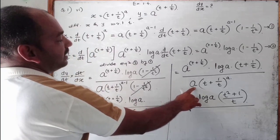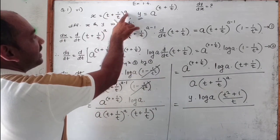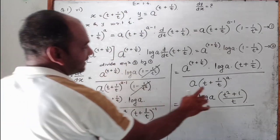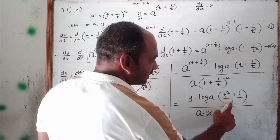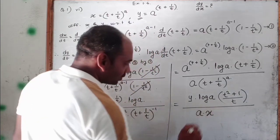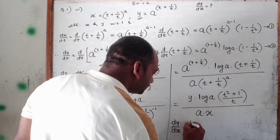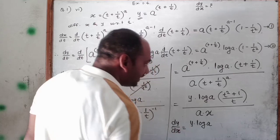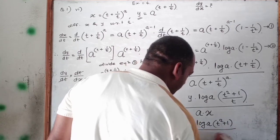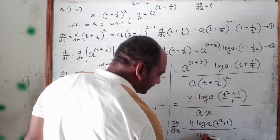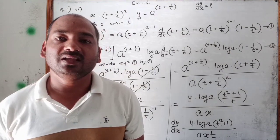Now see a in bracket t plus 1 upon t, bracket raised to a — this can be substituted as a times x. So we write a into x. The t in the denominator can be written in the denominator. So finally we get dy upon dx equal to y into log a into t squared plus 1, total divided by a times x. I hope that is clear. Thank you.